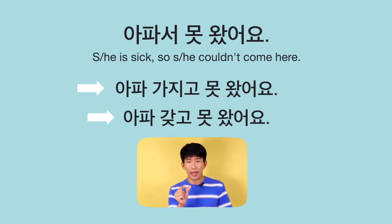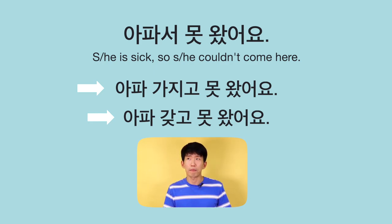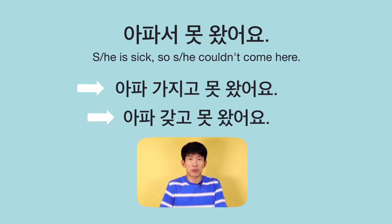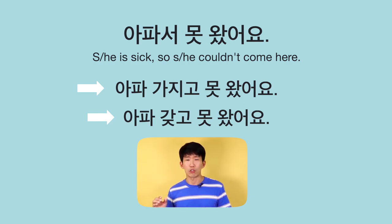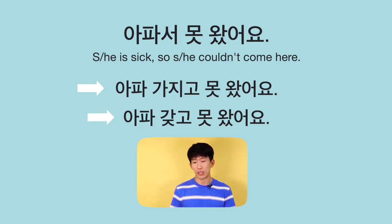In everyday casual conversations, many people like to pronounce 가지고 as 가지구, or 아파 갖고, to sound a little more cute and casual. That's why many learners might have heard it as 가지고 or 가지고 — but that's definitely incorrect. So it's 서 changing to 가지고 and 갖고.